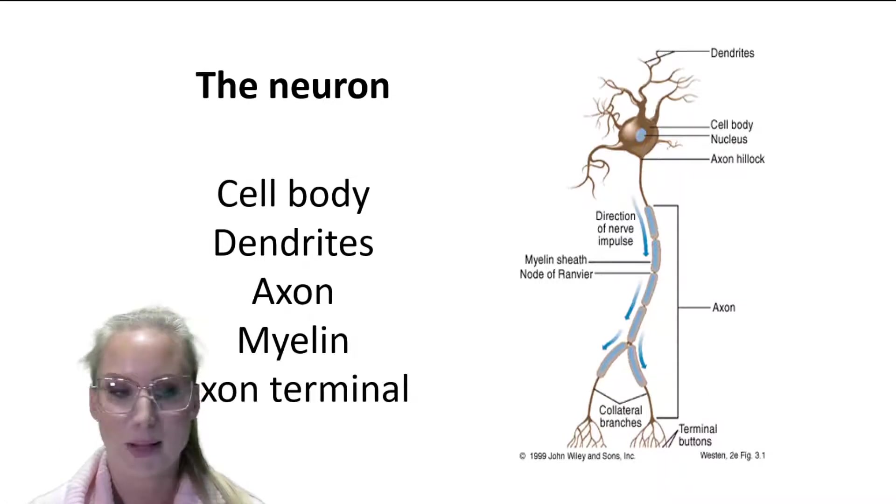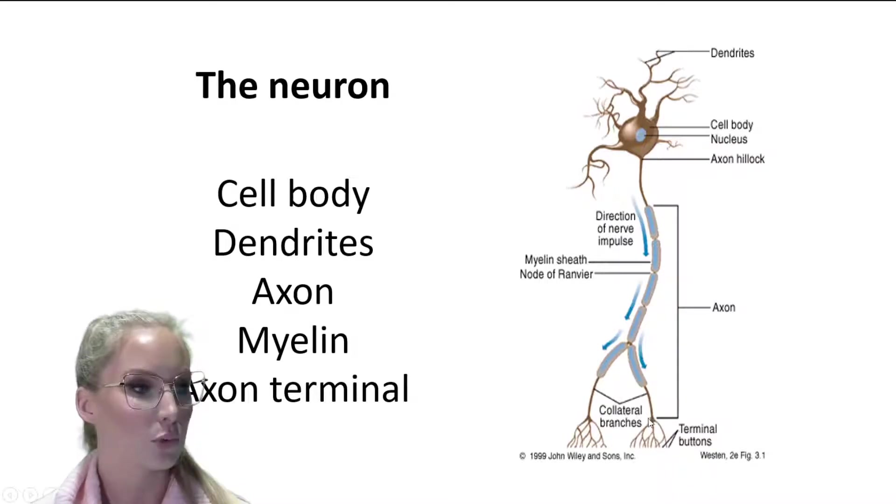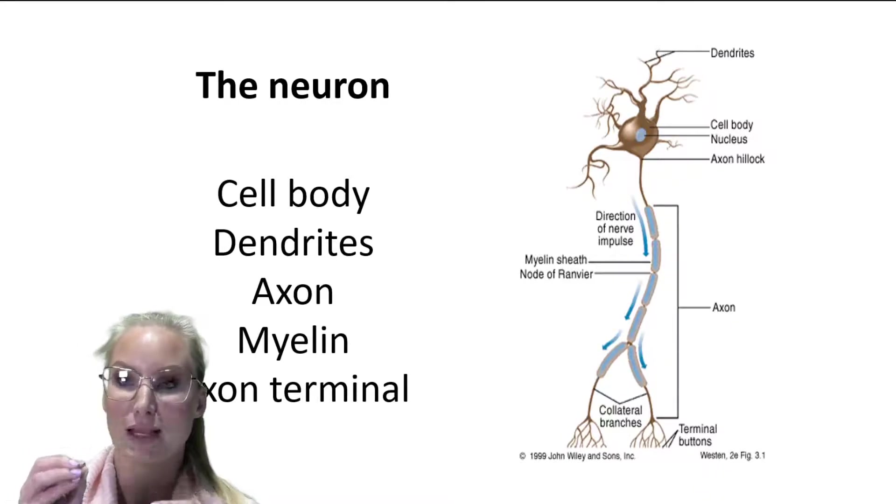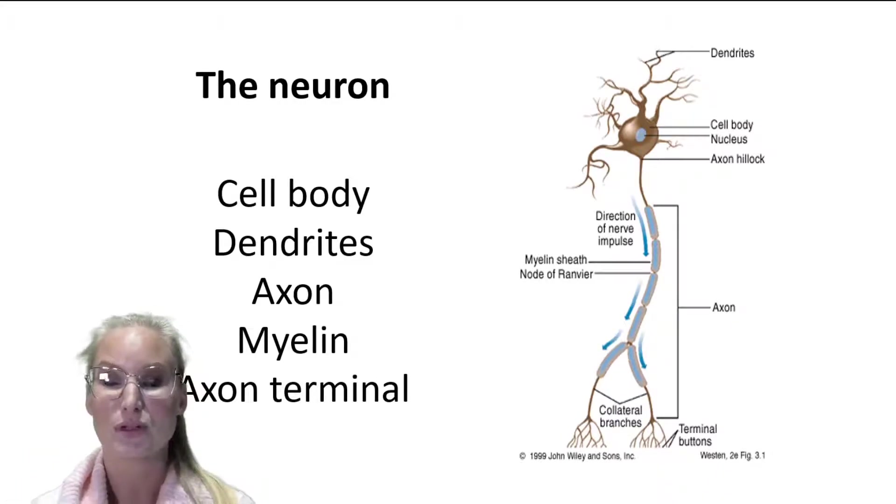The next part is the axon terminal. So the signal travels all the way down the axon and ends at what we call these axon terminals. So the axon terminals contain these little tiny synaptic vesicles, which are basically little sacs full of neurotransmitter, which are then released. And that forms a signal which the target cell can then respond to.